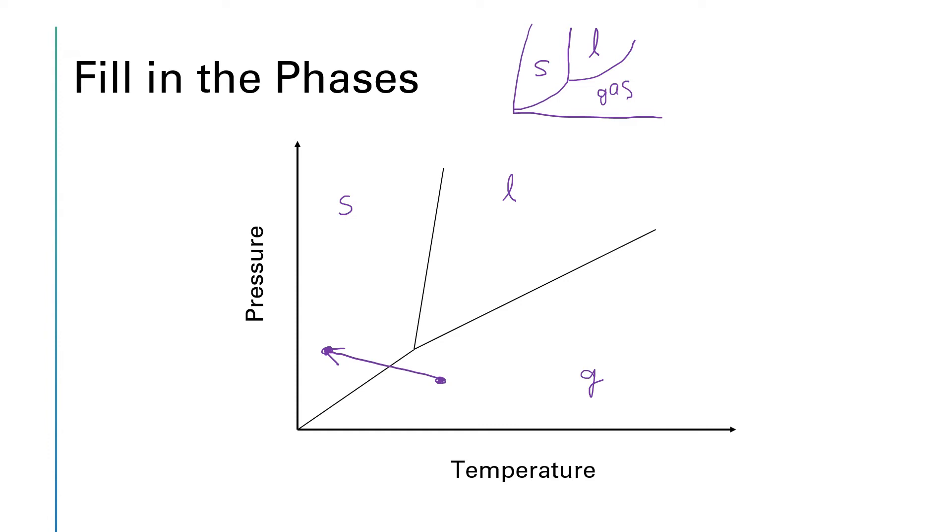Or I might ask you what phase transition happened if we went from this point to this point. So in this case, we have a liquid turning into a gas, so that would be vaporization or boiling.